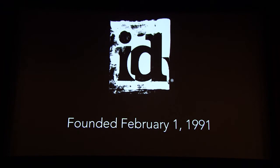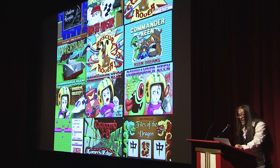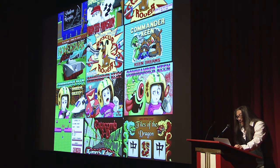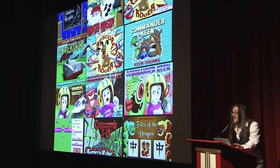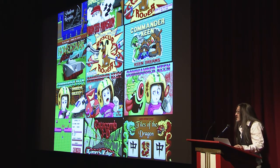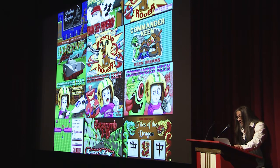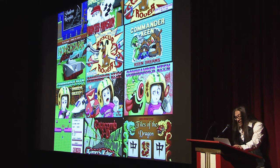Id Software was formally founded on February 1st of 1991, and we made 12 games that year — Shadow Knights, Dangerous Dave in the Haunted Mansion, Rescue Rover, and others. We actually took two months to make each game, but made two games simultaneously. This was due to our 10 years of intense game development experience, but also due to our first principle.